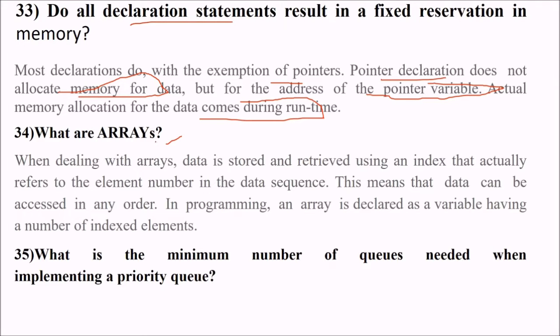What are arrays? We have known about arrays. These are contiguous storage of certain values. These values are interrelated and they are of the same data type. When dealing with arrays, data is stored and retrieved using an index, which is the array subscript in programming language. It actually refers to the element number in the data sequence. This means that the data can be accessed in any order. In programming, an array is declared as a variable having a number of indexed elements, like a[10]. This can be an array of any data type.